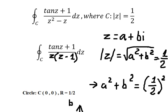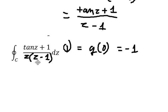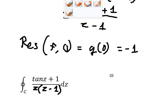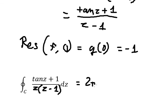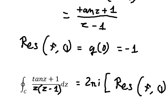Now we can find the value. We have only this one term, and the final answer is negative 2πi. That is the final answer. This is the end — thank you for watching.